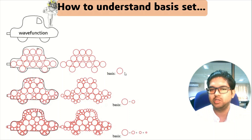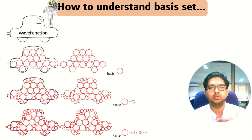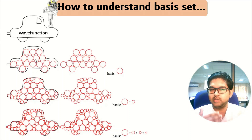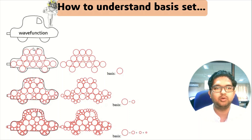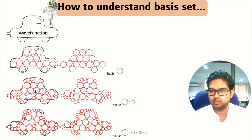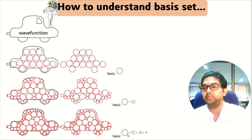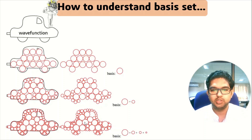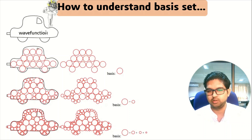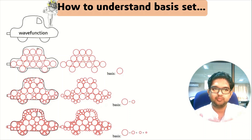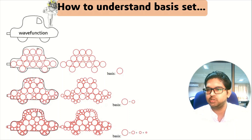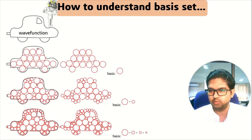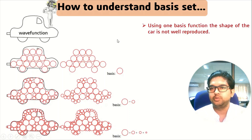When there is just one basis function, we cannot replicate the wave function exactly — there is some error. As we increase the number of basis functions, the accuracy increases. When we further increase the basis set, the wave function in the third picture starts to look similar to the target wave function. So a basis set is a linear combination of different types of basis functions which represents the wave function of a molecule.